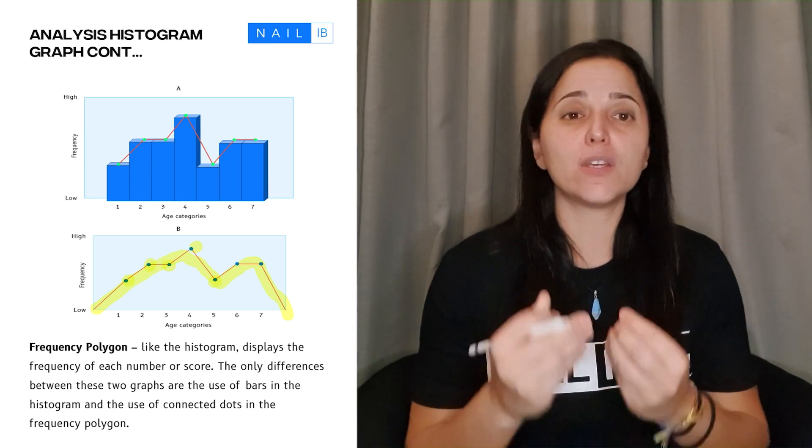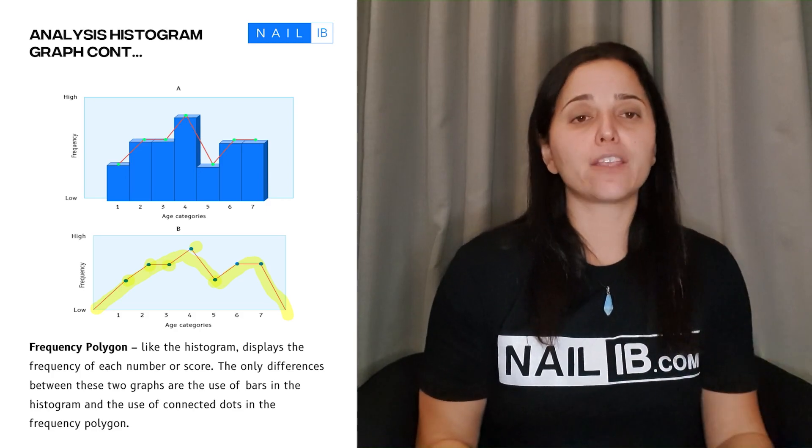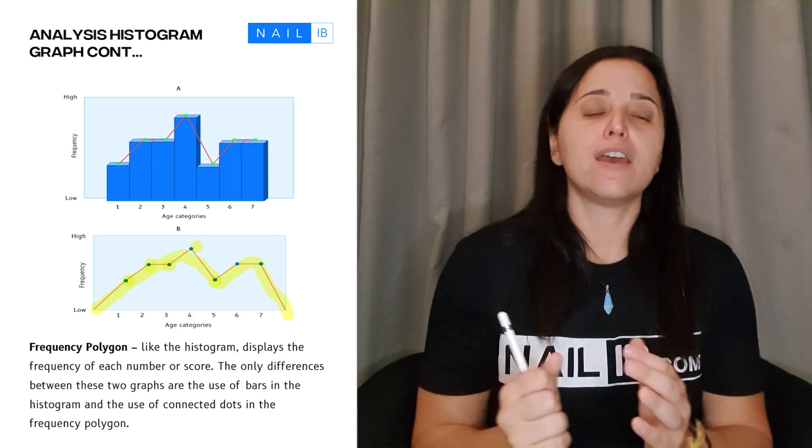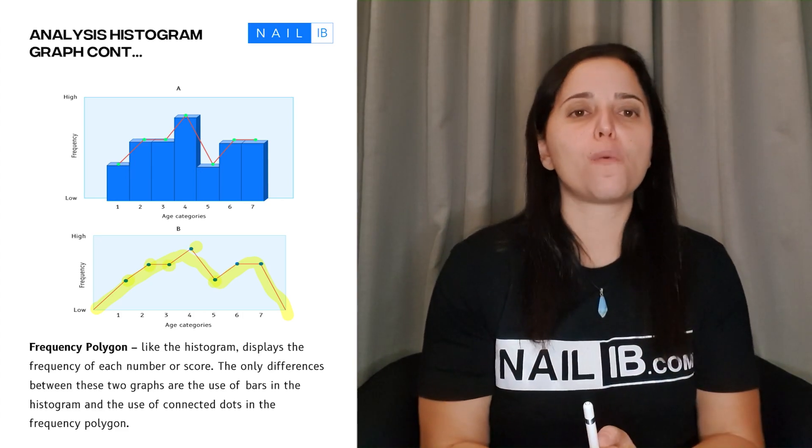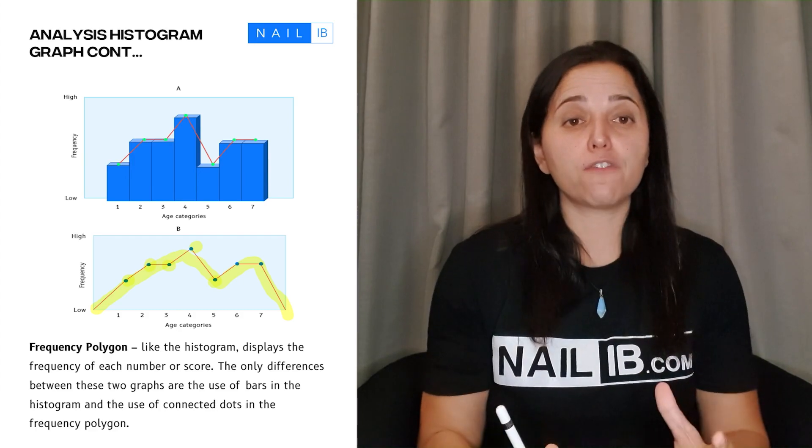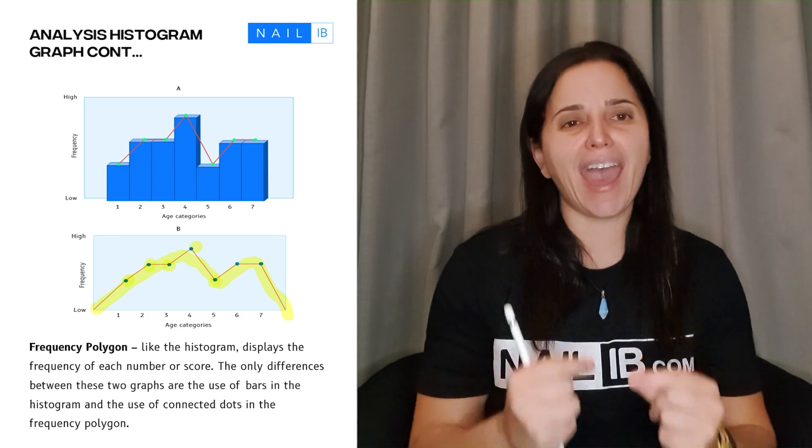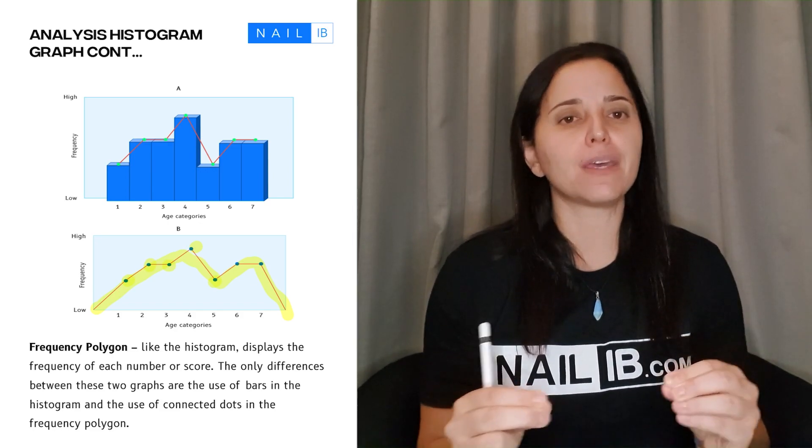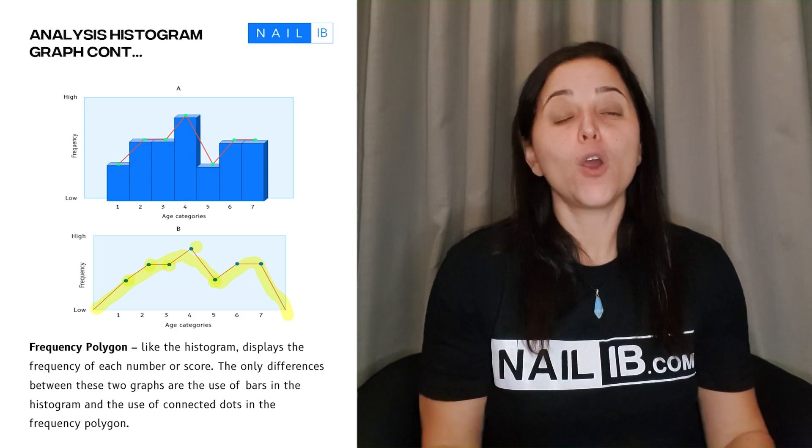One of the most common graphs that I see when it comes to bio is the line graph as well as the bar graph. These are the most common ones. Remember that if you're going to do comparison between two groups, use the bar graphs. If you're going to do according to time, it has to be line. Do not use bar graphs when the x-axis is about time. You will get points off.